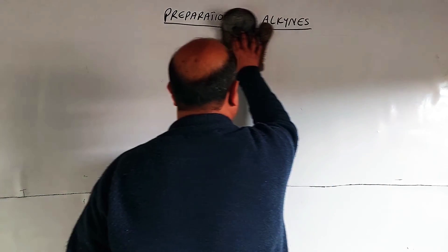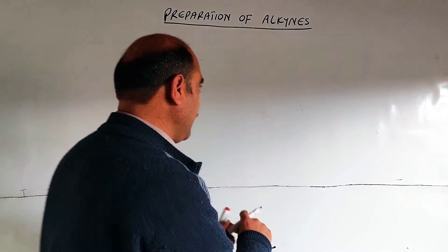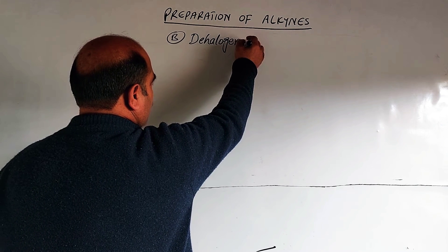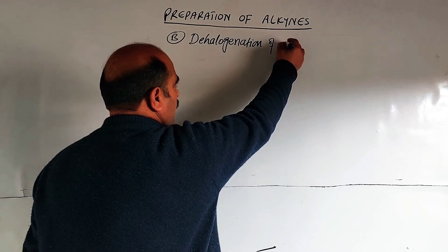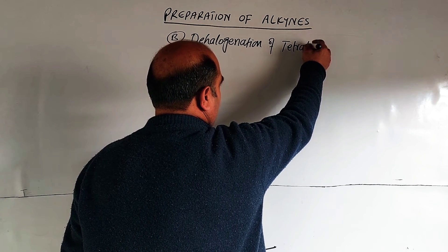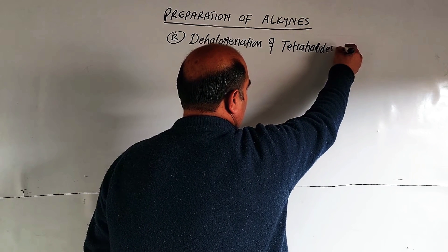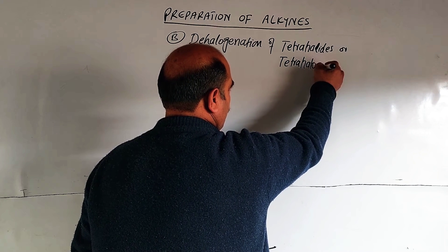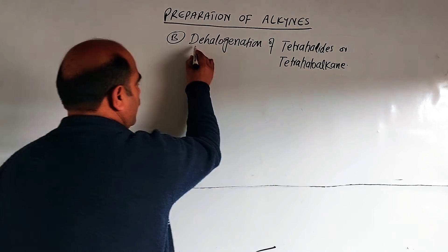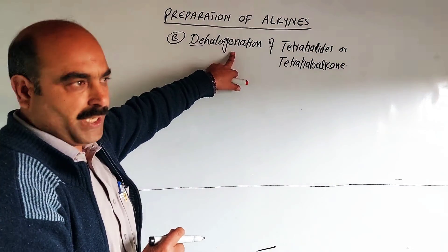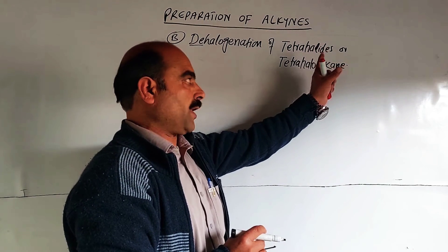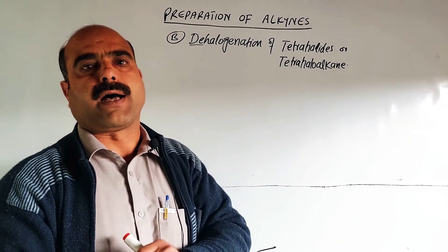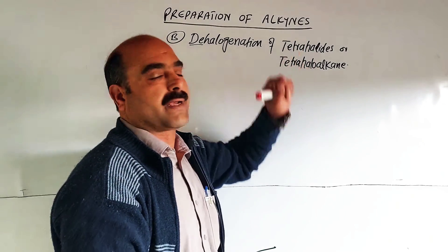Second method: dehalogenation of tetrahalides. Also called tetrahalogenoalkane. 'Dehalogenation' means removal of halogens. 'Tetra' means four, 'halo' means halogen atom, 'alkane' means carbon-to-carbon single bond. Alkanes having four halogen atoms — two on each carbon — are called tetrahalides.